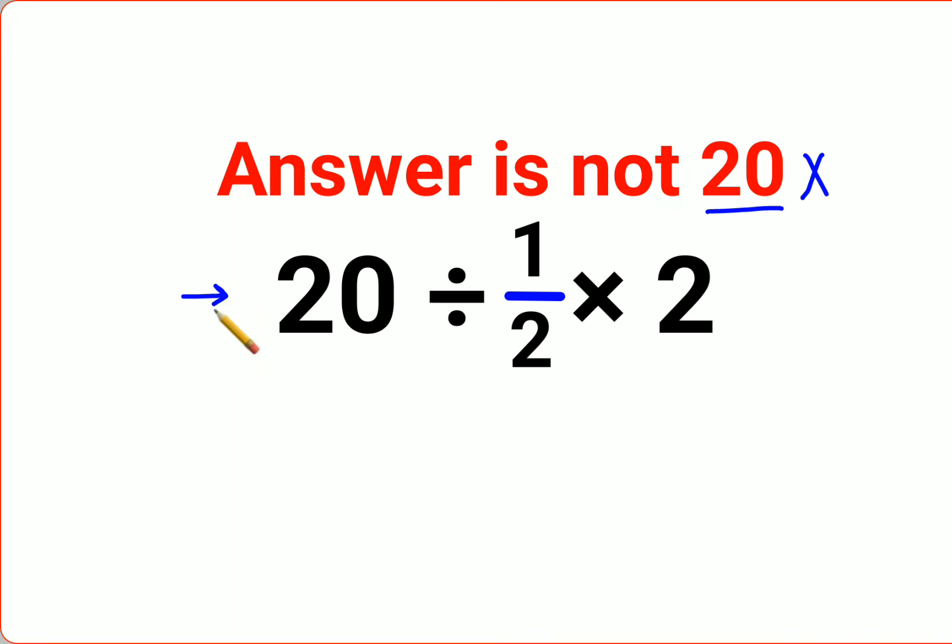The question we have here is 20 divided by 1 upon 2 into 2. A lot of people think we can cancel this and this, and then we'll just get 20 divided by 1, which gets you 20, but that is incorrect. Now why is it like that?